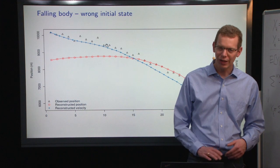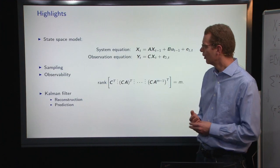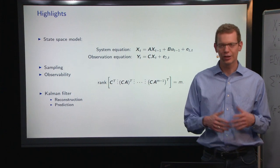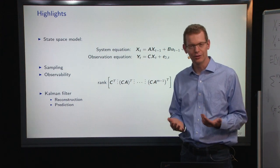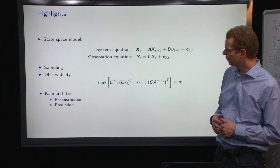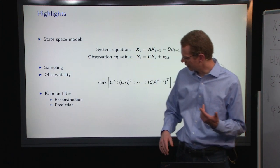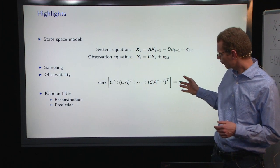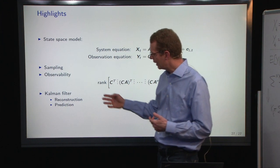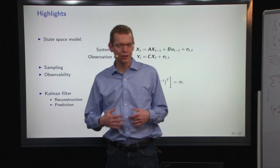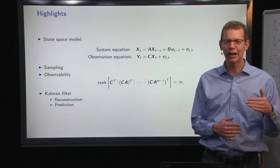That was about the falling body. To round off here today, we've spent a lot of time discussing the state-space model. The important thing is it only depends on the previous state, so it has the Markov property. We talked about sampling to go from continuous to discrete time systems. Observability, you need to have full rank of this matrix. And we spent some time on the Kalman filter doing reconstruction and predictions.